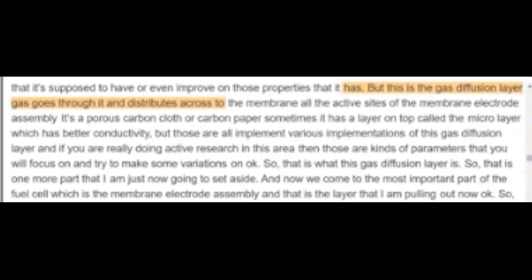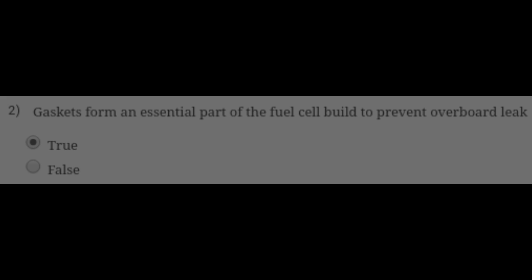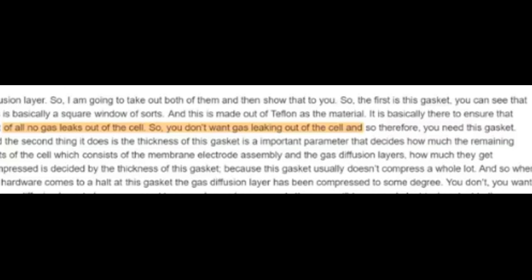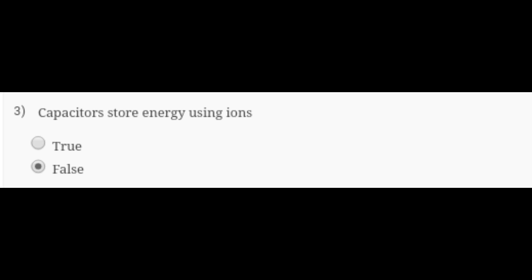Now the second question is: gaskets form an essential part of fuel cell built to prevent overall leak. It is also true. You can see the proof in the highlighted line where it is written that no gas leaks out of the cell. You don't want gas leaking out of the cell and therefore you need this gasket. So clearly it is written over here, the answer is true.